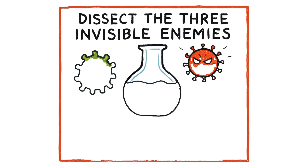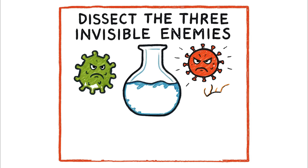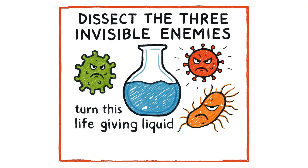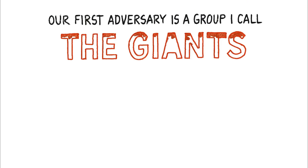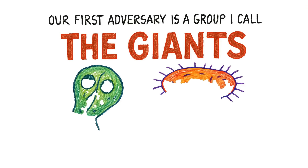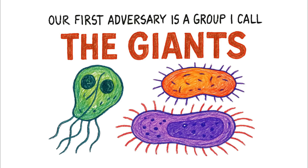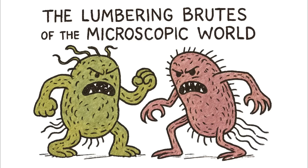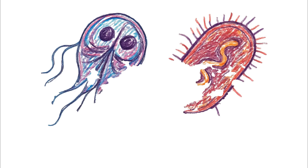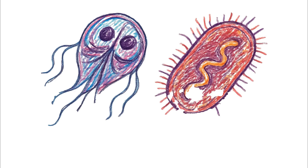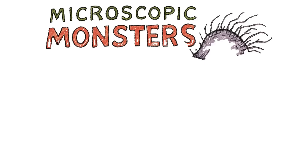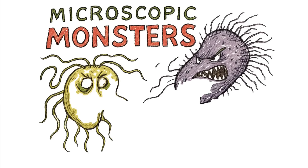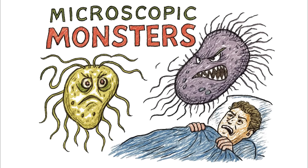In this series, we're going to dissect the three invisible enemies that turn this life-giving liquid into a deadly poison. Our first adversary is a group I call the Giants — the lumbering brutes of the microscopic world. Things like Giardia lamblia, or Escherichia coli, better known as E. coli — the microscopic monsters that haunt a survivor's nightmares.